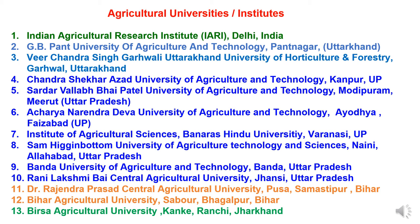The universities of Uttar Pradesh include: Fourth — Chandra Shekhar Azad University of Agriculture and Technology, Kanpur. Fifth — Sardar Vallabhbhai Patel University of Agriculture and Technology, Modipuram, Meerut. Sixth — Acharya Narendra Deva University of Agriculture and Technology, Ayodhya (Faizabad). Seventh — Institute of Agricultural Sciences, Banaras Hindu University, Varanasi. Eighth — Sam Higginbottom University of Agriculture, Technology and Sciences, Naini, Allahabad. Ninth — Banda University of Agriculture and Technology, Banda. And tenth — Rani Lakshmi Bai Central Agriculture University, Jhansi, Uttar Pradesh.